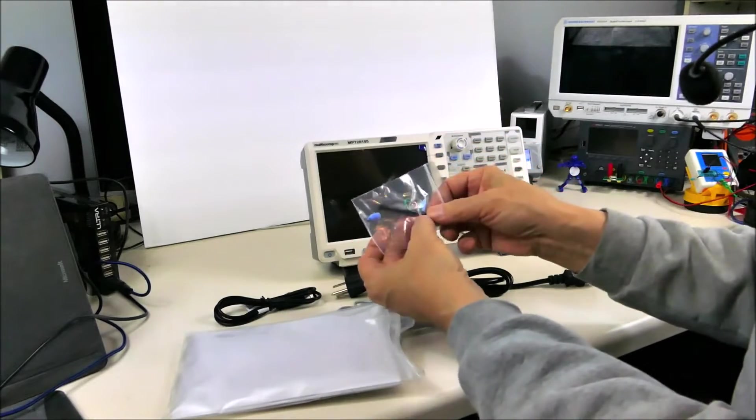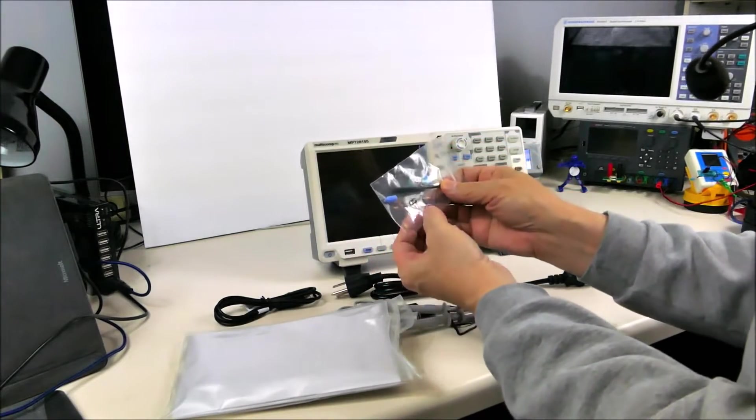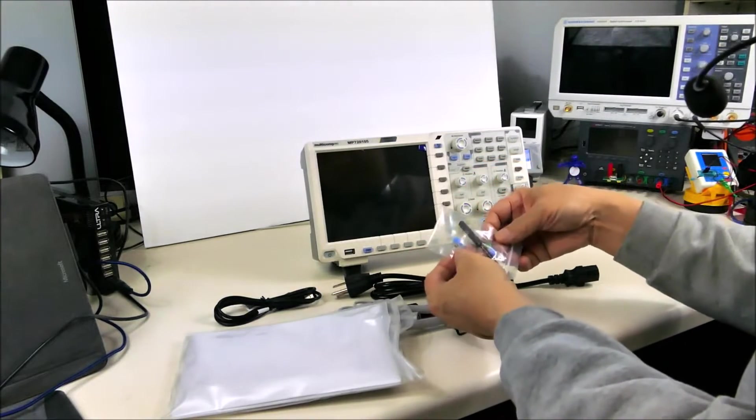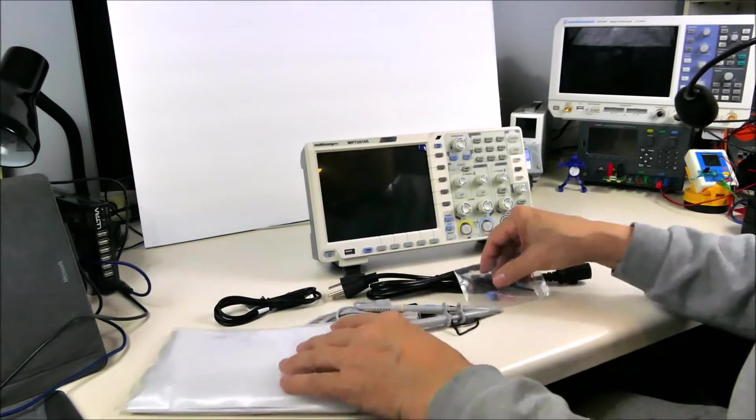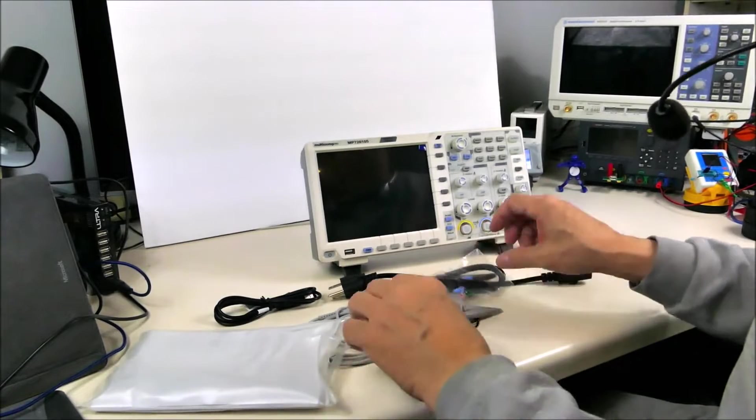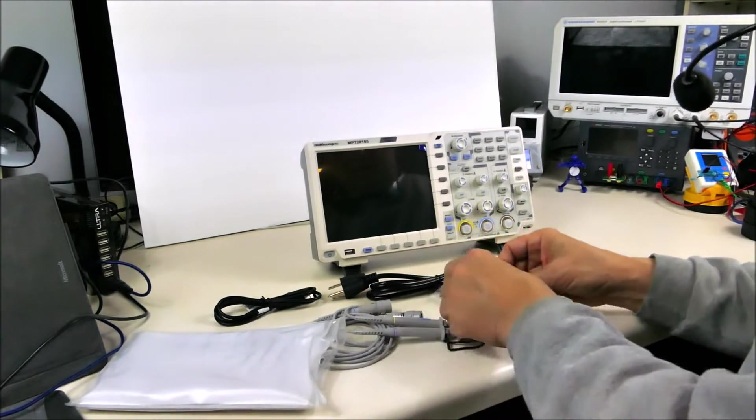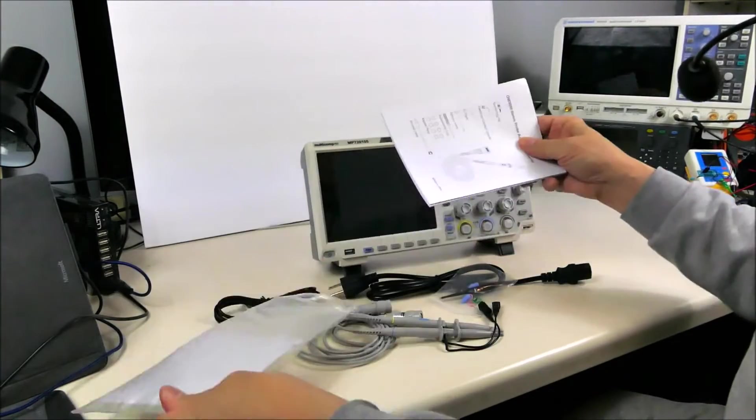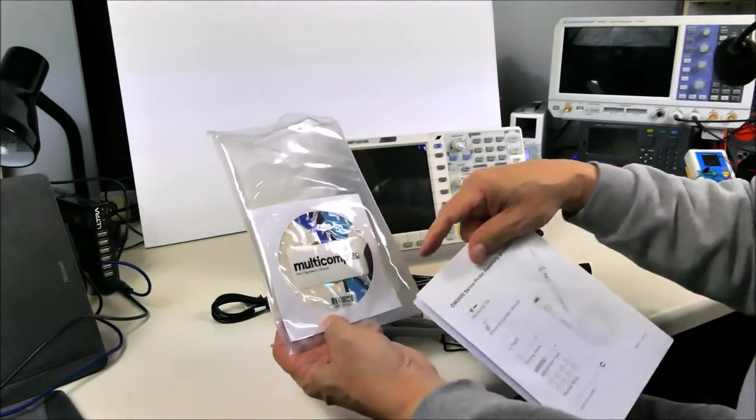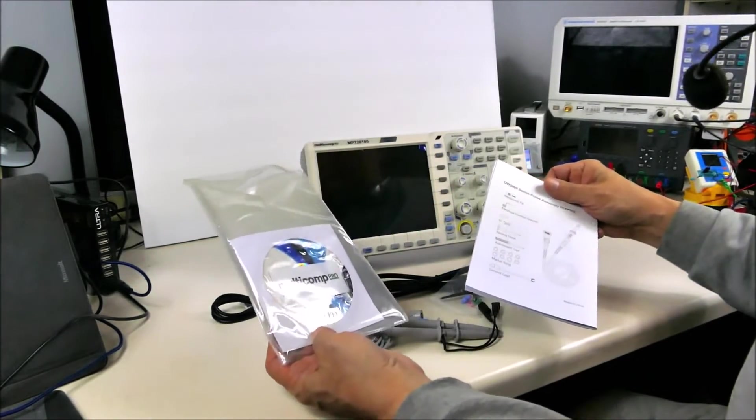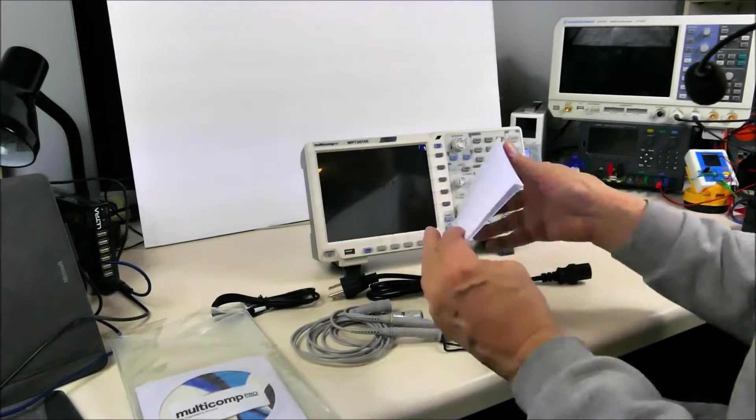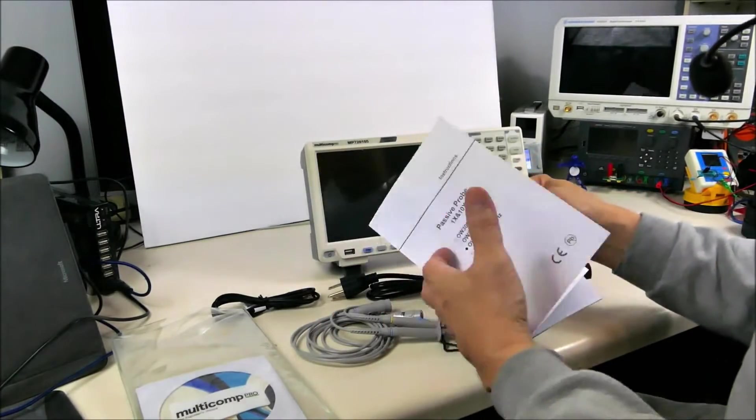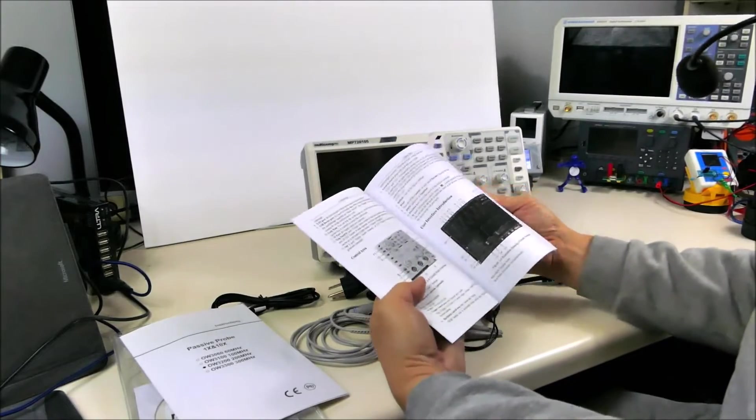Wow, even some of these very nice little close grounding tip connectors. Looks like an adjustment tool here. All right, nicely done. Oh, there's a DVD or a CD with some software on it. A manual for the probe, manual for the oscilloscope.